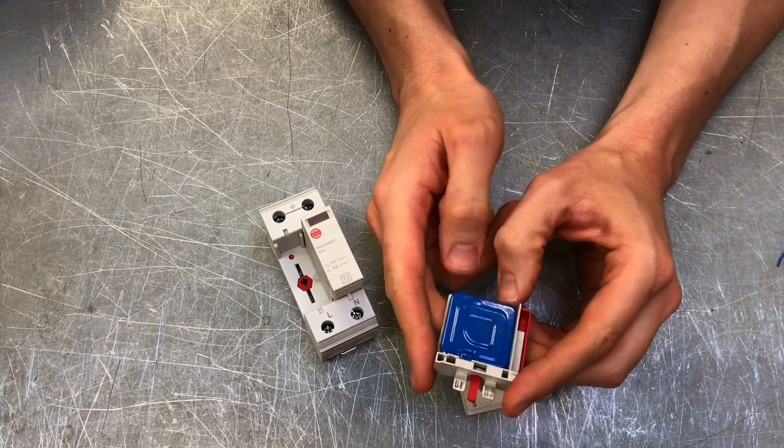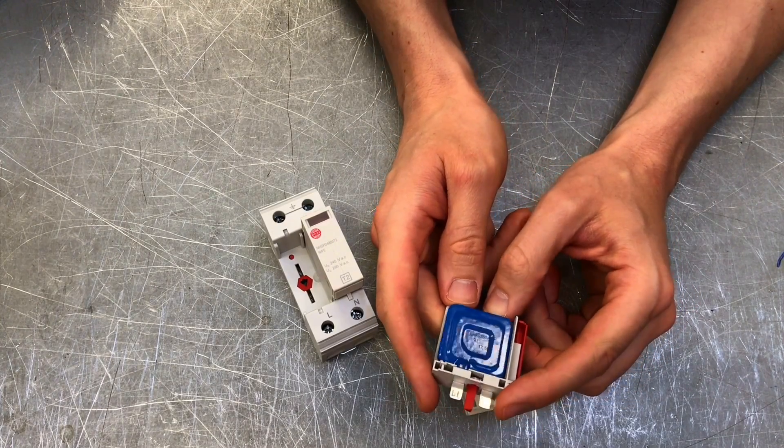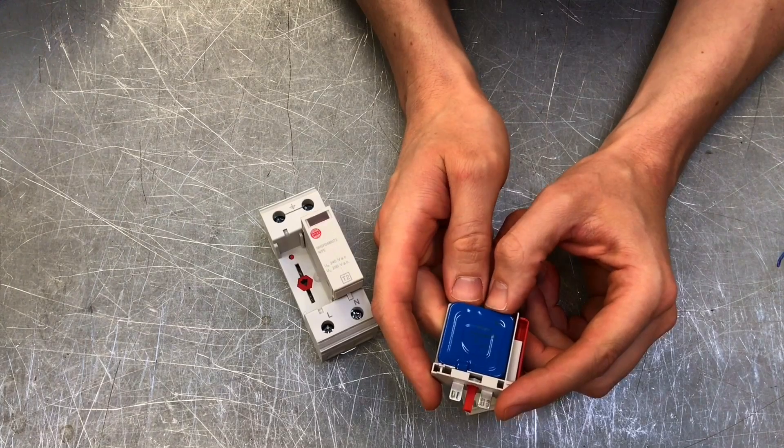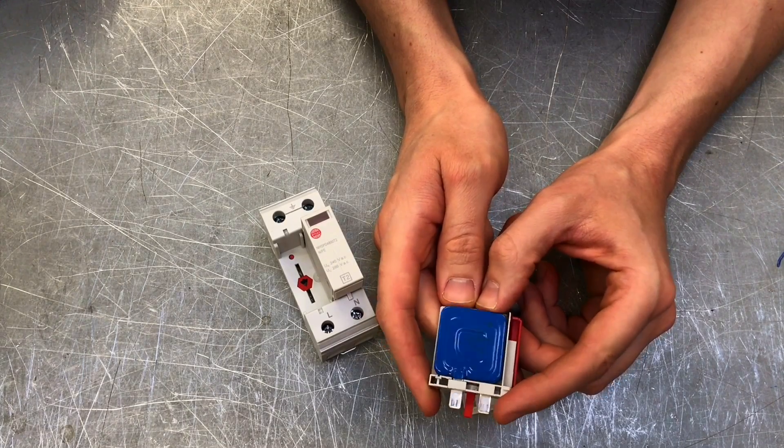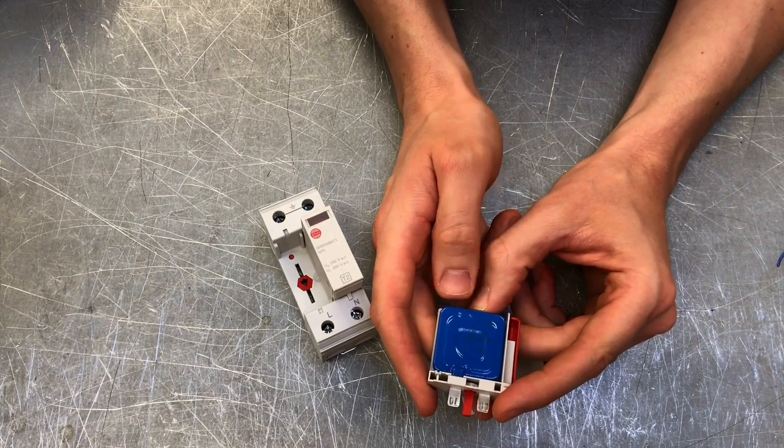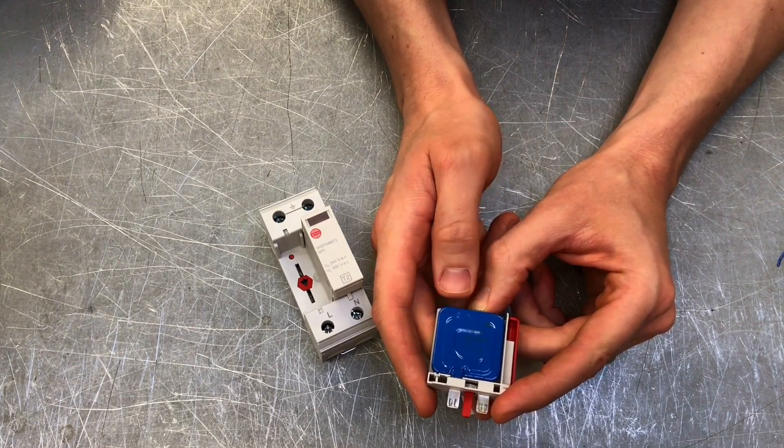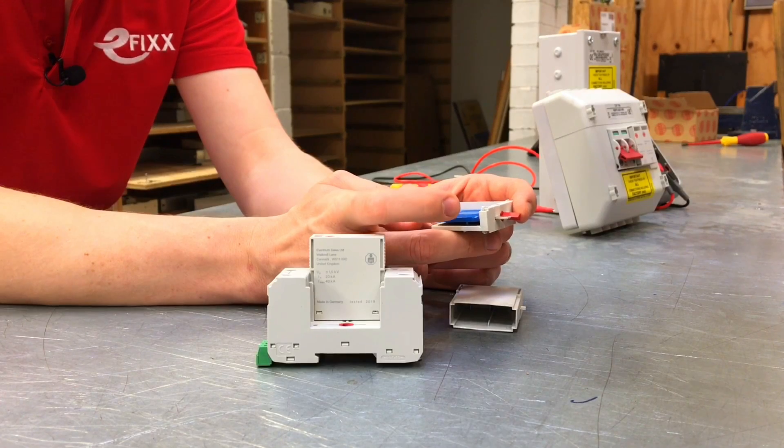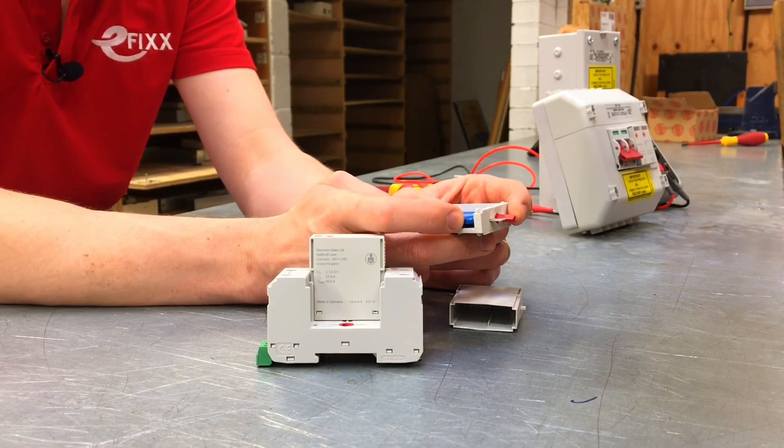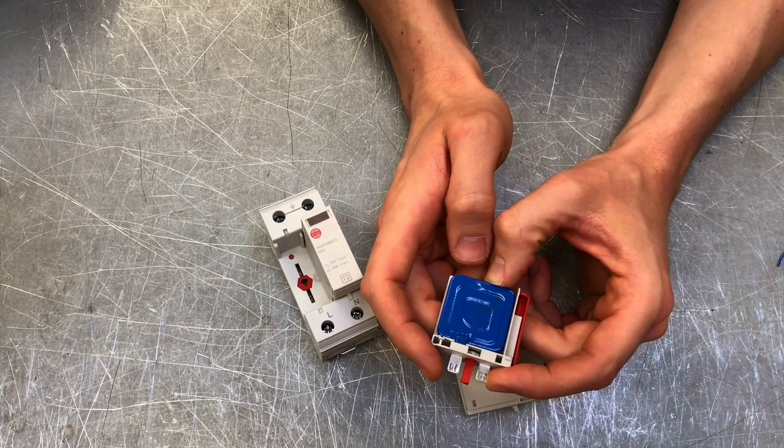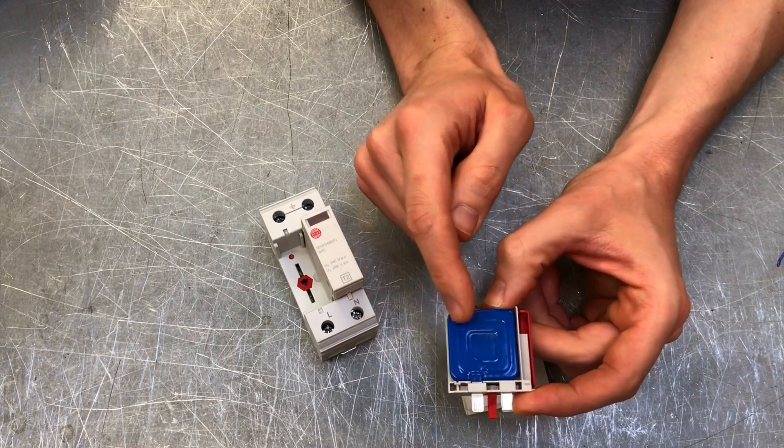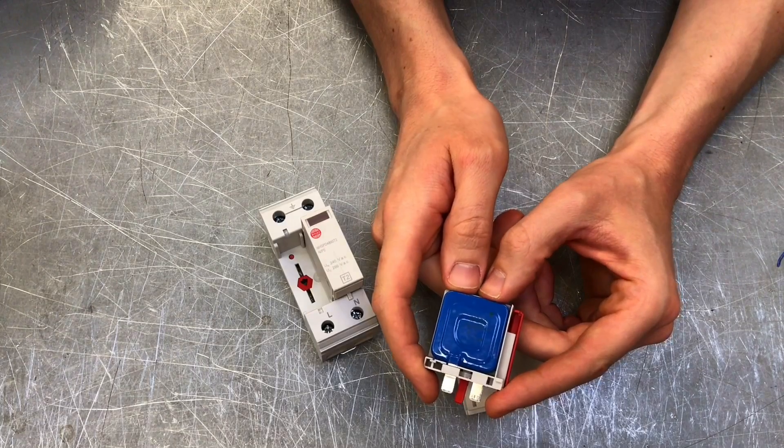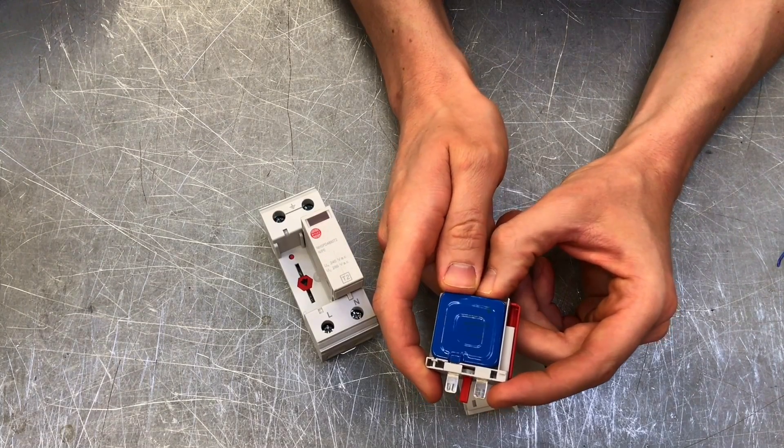This blue component is what's known as a varistor, a variable resistor. We're familiar with thermistors that change resistance based on temperature. This varistor changes its resistance based on the amount of voltage applied to it. At nominal voltage 230 volts, it has a very high resistance and won't allow current to pass through. But if we increase the voltage, this material's resistance reduces, gets very small, and current is allowed to pass through.